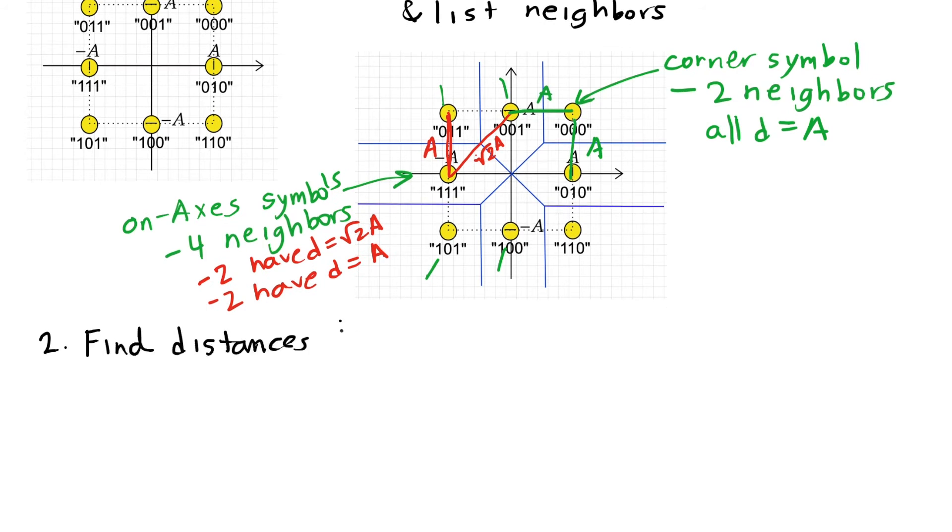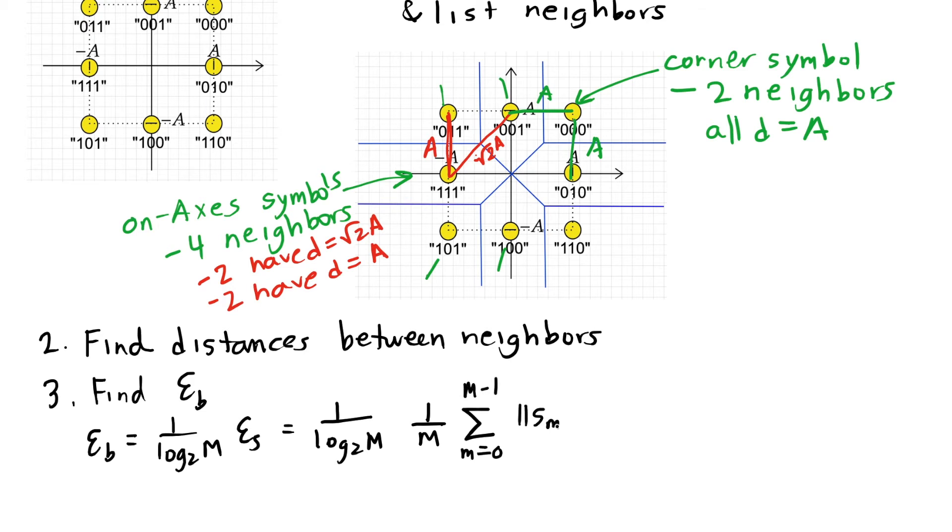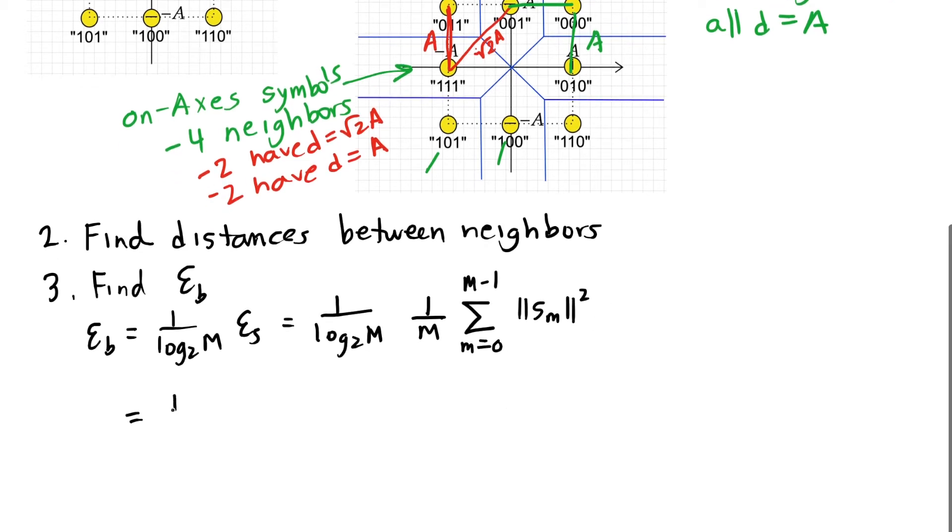The second step is to find the distances between the neighbors. I've actually already done that. So the third step is going to be to find the energy per bit. The formula is going to average over all of the symbols, their squared magnitude, and divide by log base 2 of m. So what I get in this case, because m is 8, I get 1 over 3 times 1 over 8, and then this sum of all the 8 distances from the origin squared. Well, some of the distances are square root of 2a, some of them are a, and in fact there's four of each.